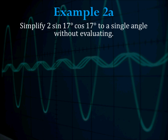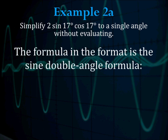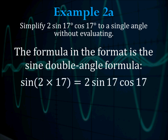Example 2a: simplify 2 sine 17 cosine 17 to a single angle without evaluating. We want to convert this into the sine or cosine of something. The format matches the sine double angle formula, 2 sine alpha cosine alpha, where alpha is 17. So the sine of 2 times 17 equals 2 sine 17 cosine 17, meaning the expression equals the sine of 34 degrees. Look to see what the expression resembles in terms of the half or double angle formula, then plug in the right numbers.